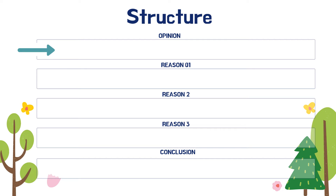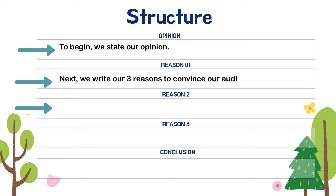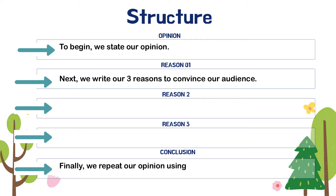To start our persuasive text we should first state our opinion. Next we introduce our three reasons that would convince our audience or change their mind. After we've written our three reasons we have to have a conclusion to end our persuasive text. In the conclusion we restate the opinion that we wrote at the beginning, but we repeat it using different words.